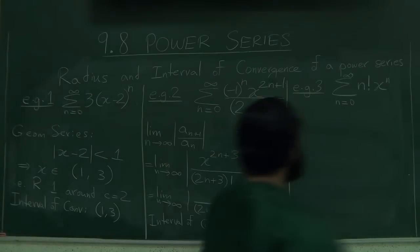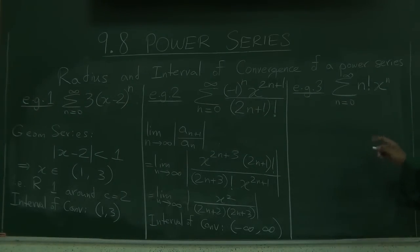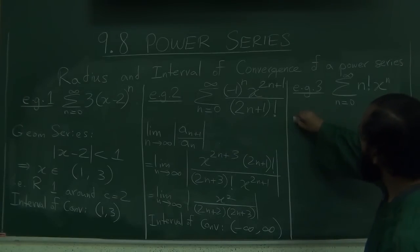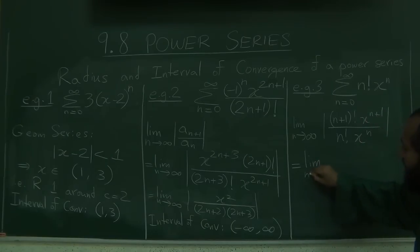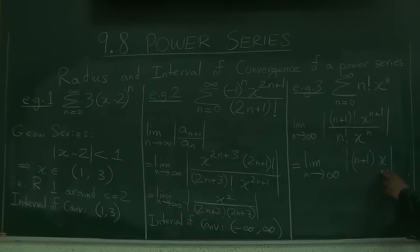Let's do one more quick example here. We're going to, again, use the ratio test as a tool here to help ourselves with this thing. Limit as n goes to infinity of n plus 1 factorial x to the n plus 1 over n factorial x to the n, and this equals the limit as n goes to infinity of, what do we get here? So this is the x, the 1x there, and n plus 1, so you get n plus 1 times x.